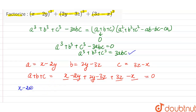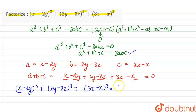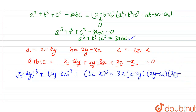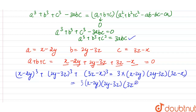So the value of (x minus 2y)³ plus (2y minus 3z)³ plus (3z minus x)³ will be equal to 3 times a times b times c. So 3 into a, which is (x minus 2y), b is (2y minus 3z), and c is (3z minus x). Therefore the answer is 3(x minus 2y)(2y minus 3z)(3z minus x). This will be the required answer for the given question.